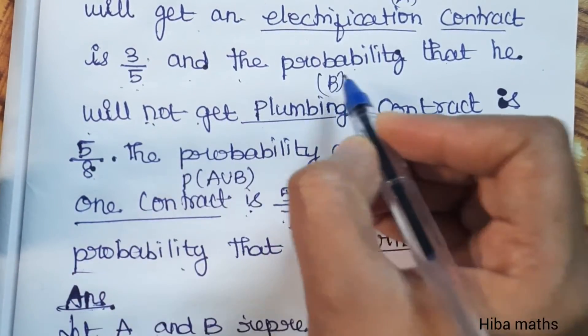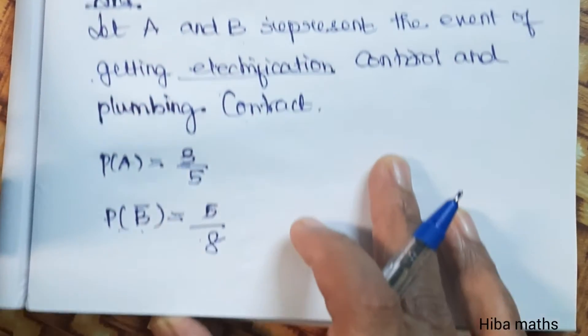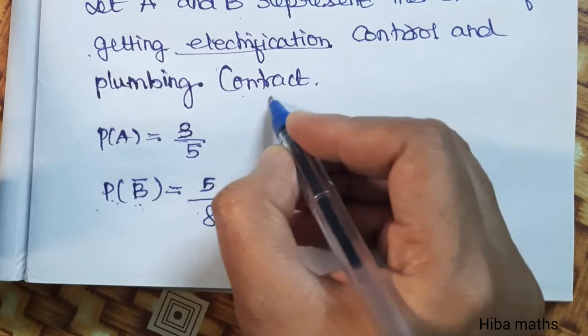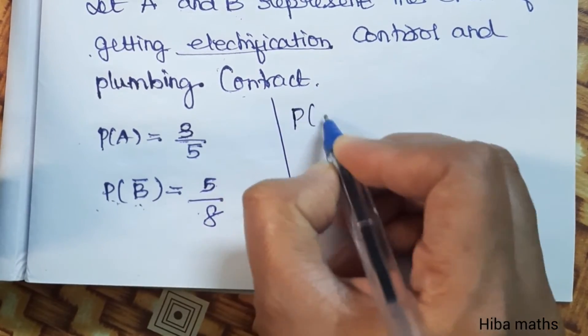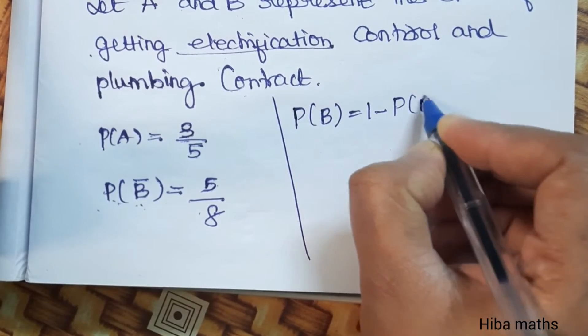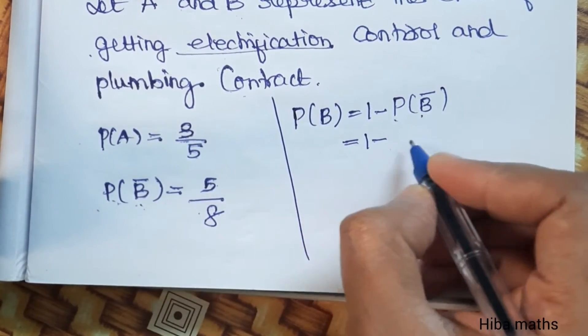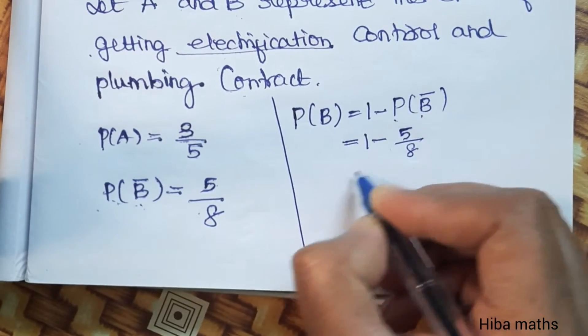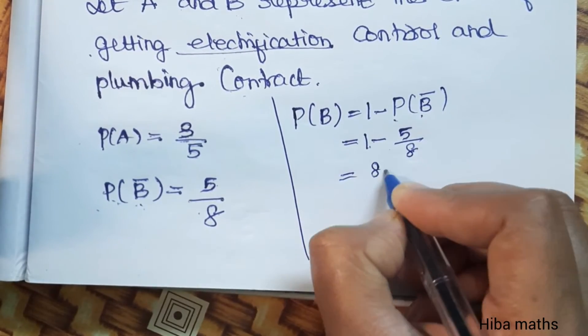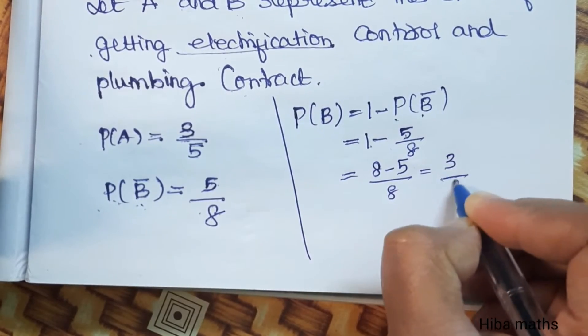Will not get - so B bar. To find P of B, P of B is equal to 1 minus P of B bar. That is equal to 1 minus 5 by 8. 8 minus 5 by 8. That is 3 by 8.